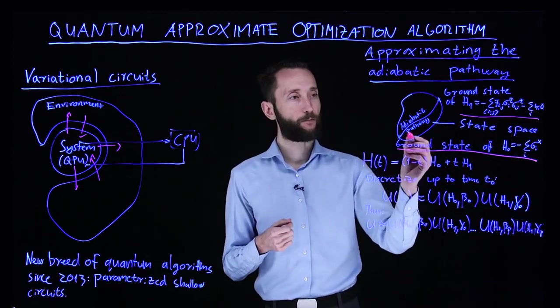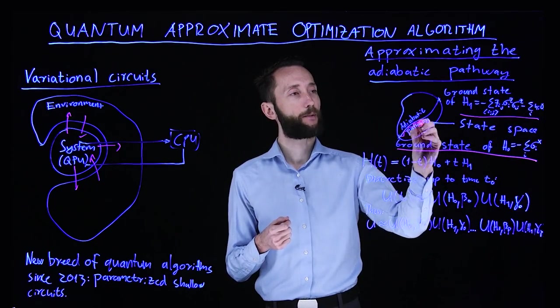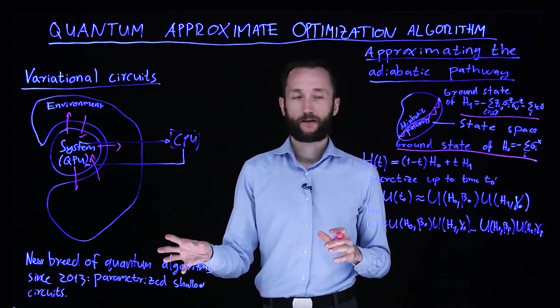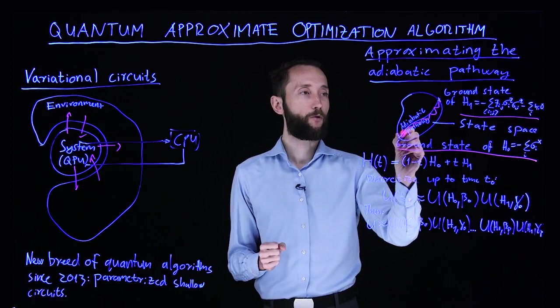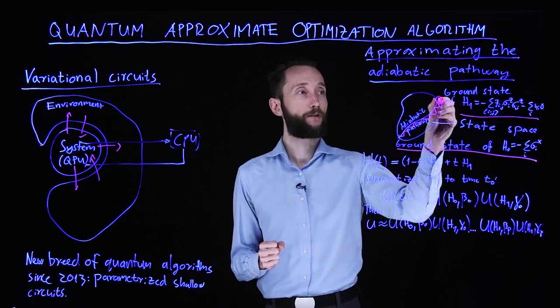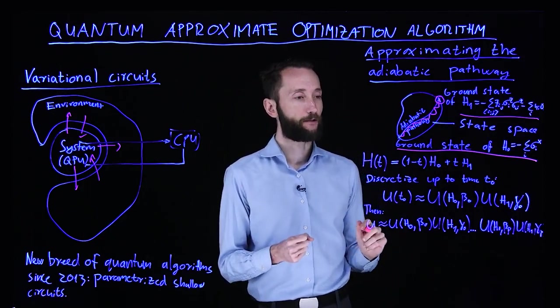On the gate model quantum computer, we break this pathway up into discrete chunks. The way we parametrize the circuit is to have a more and more accurate approximation of this transition. At the end, you would read out the ground state just the same way as on a quantum annealer.